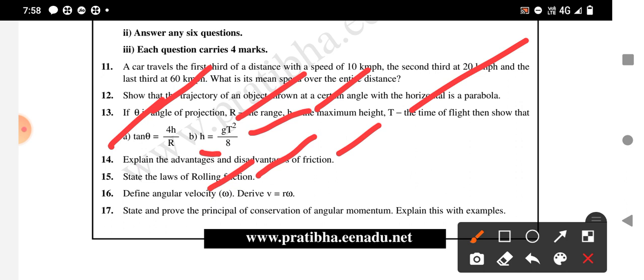The next question is: define angular velocity omega and derive V equals R omega, where V is the linear velocity. So you need to derive V equals R omega.